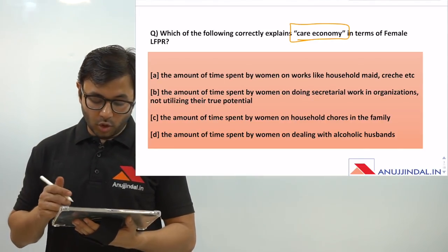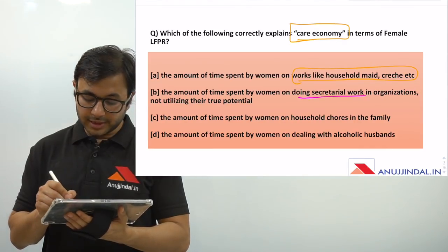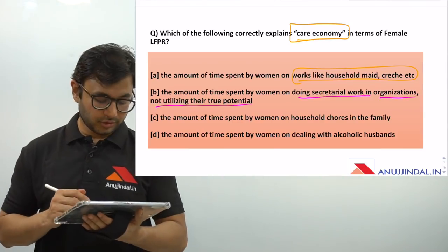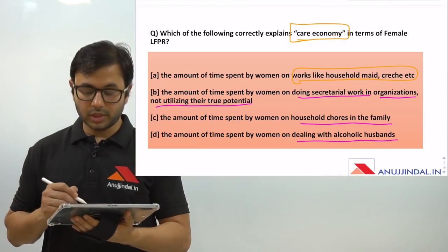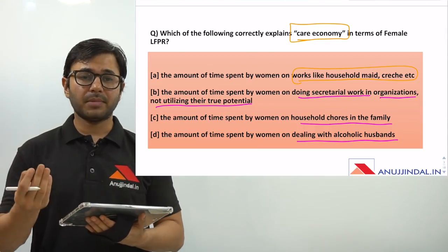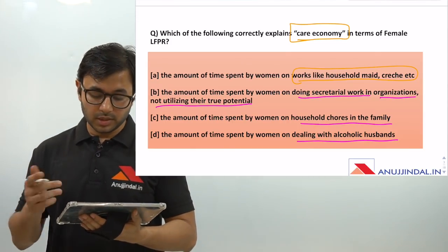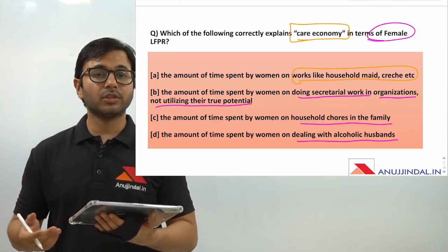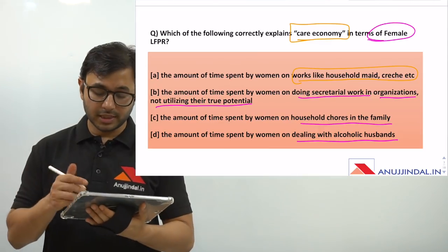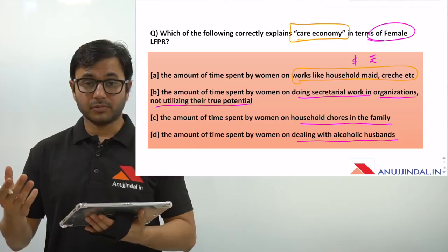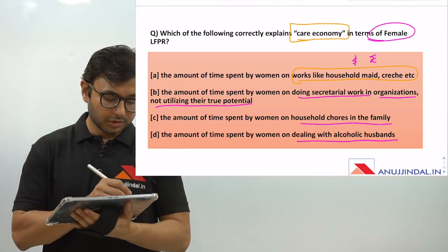The options are: A — the amount of time spent by women on work like household maid, creche, etc. B — the amount of time spent by women on secretarial work in organizations, not utilizing their true potential. C — the amount of time spent by women on household chores in the family. D — the amount of time spent by women on dealing with alcoholic husbands. Option A seems close because of keywords like 'household maid' and 'creche,' but when women work as household maids or in creche facilities, they are paid — so it cannot be part of care economy.